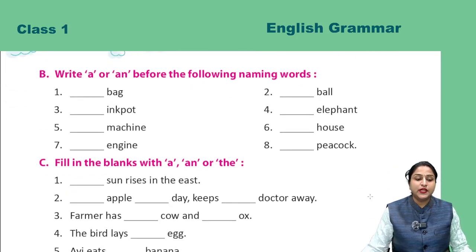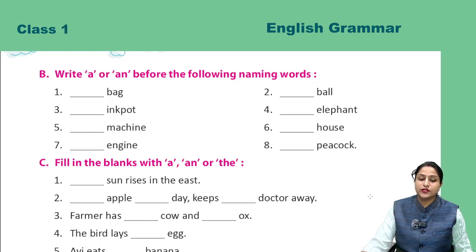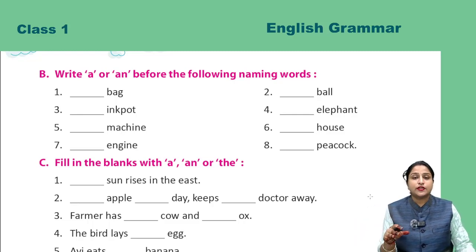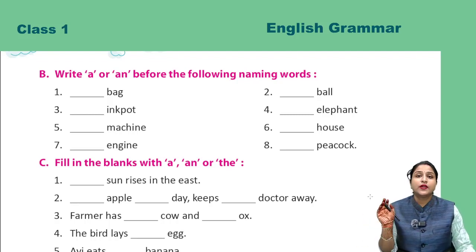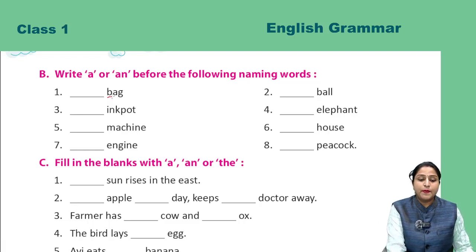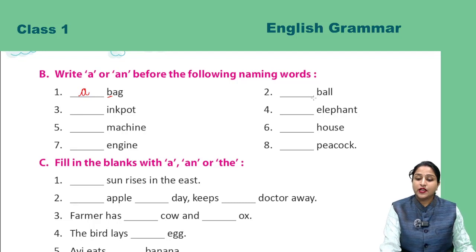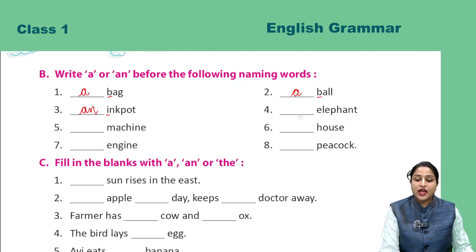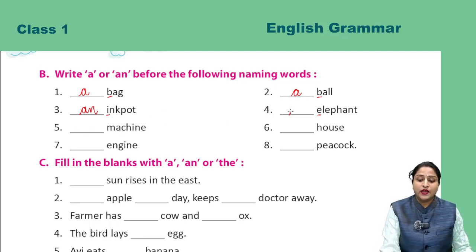Now next exercise P: Write A or AN before the following naming words. Aapko A aur AN lagana hai — naming word ko dekhna hai ki wo vowel se start hai ya consonant se. Jo vowel se hoga uske aage AN lagaenge, jo consonant se start hoga uske aage A lagaenge. First: dash bag — bag B se start hai aur B consonant hai, to yahaan likhenge A bag. Second: ball — again B se start hai to A ball. Third: ink pot — ink pot I se start hai aur I vowel hai, to yahaan aayega AN ink pot. Fourth: dash elephant — elephant ka E vowel hai, to AN elephant. Baaki ke char part aap khud karenge.